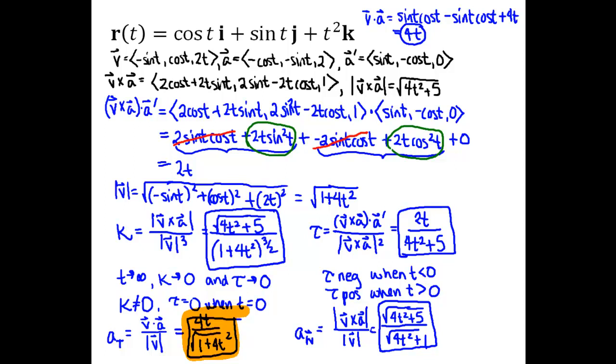And when that tangential component of acceleration is zero, only at one particular time when t equals zero, then the acceleration vector is perpendicular to the motion along the curve. So at that time the acceleration vector is only in the direction of n, it has no component in the direction of t.